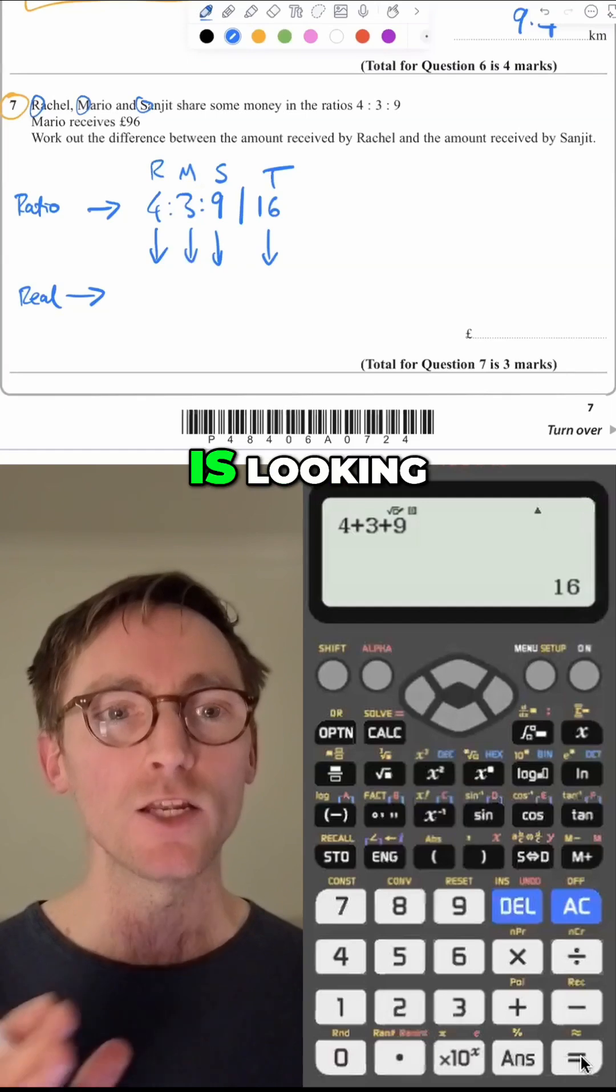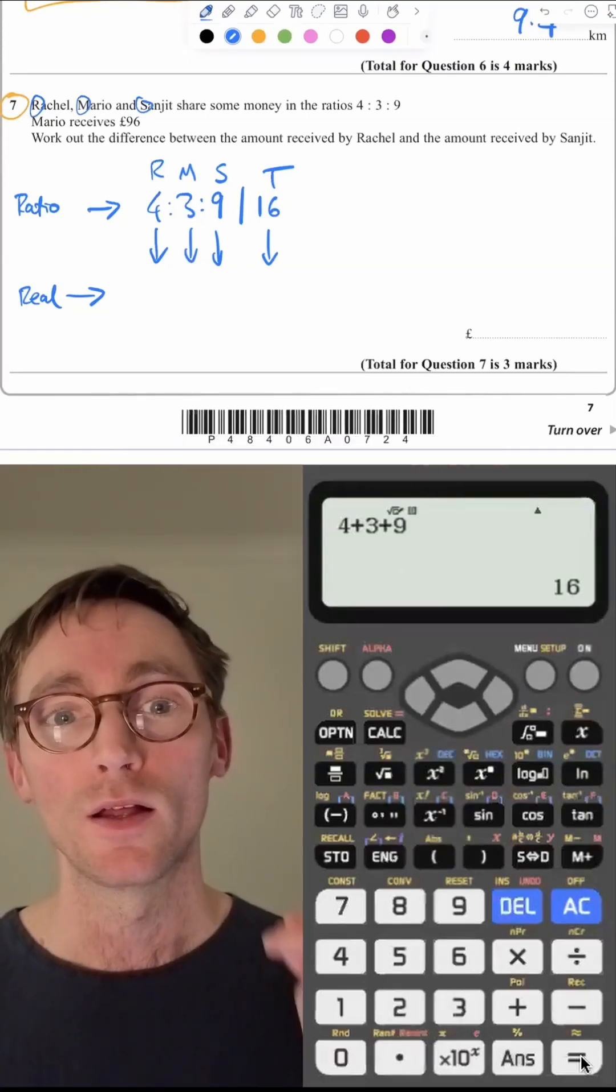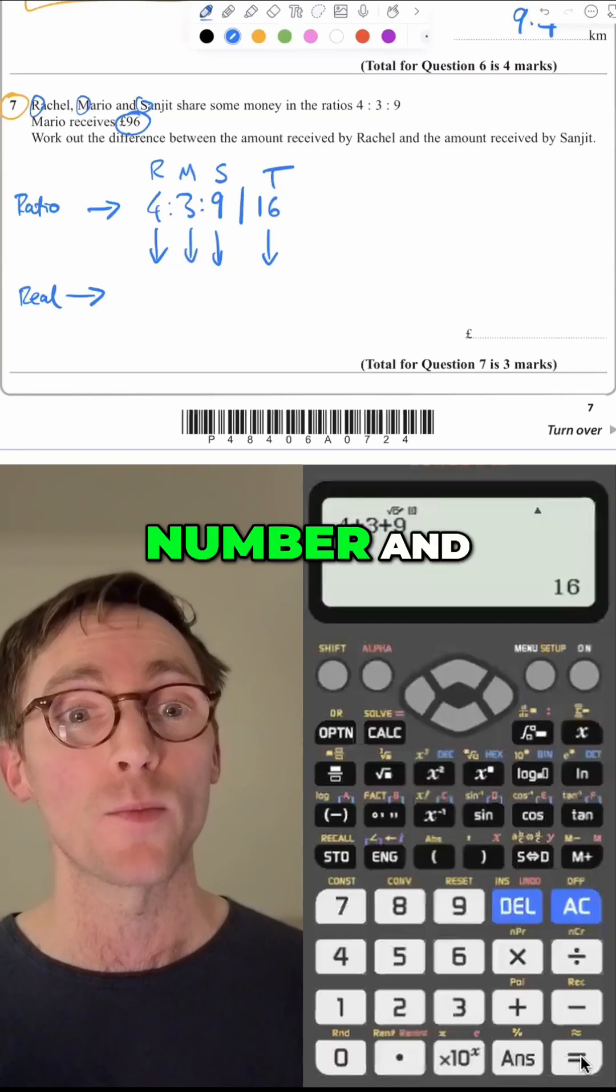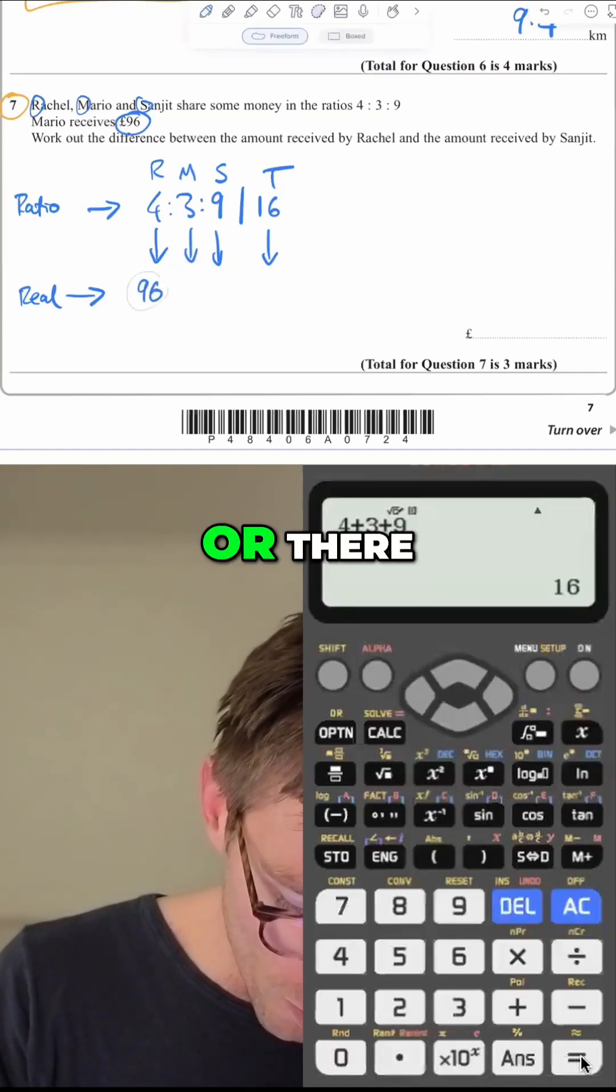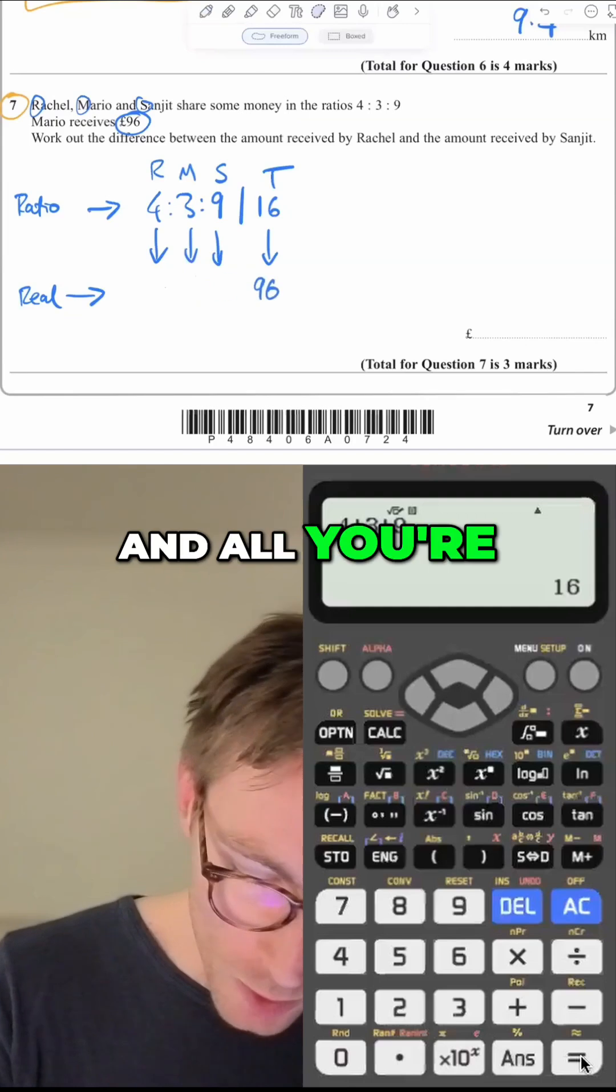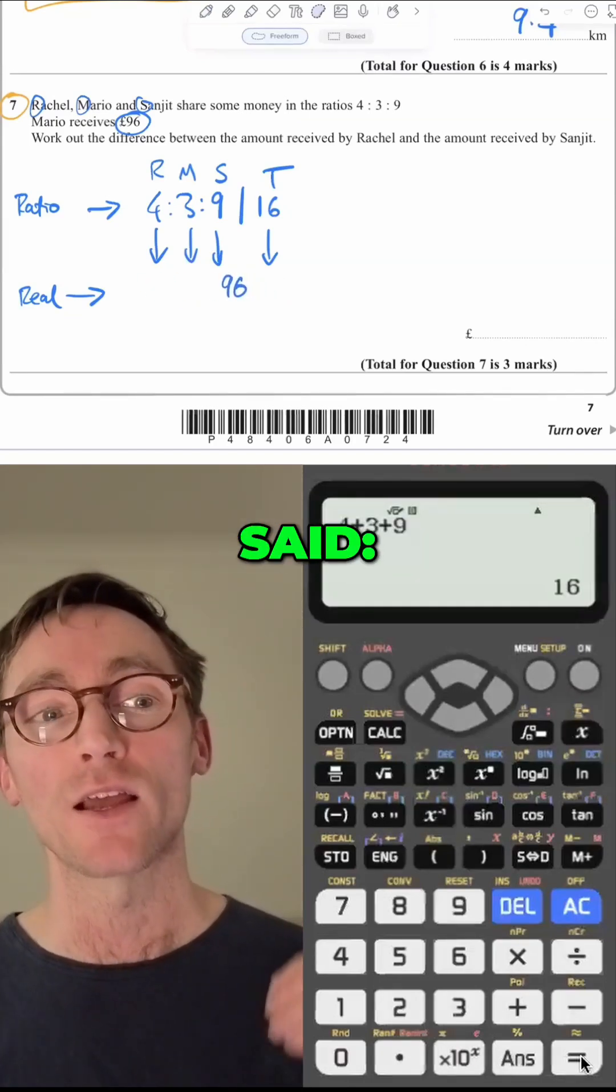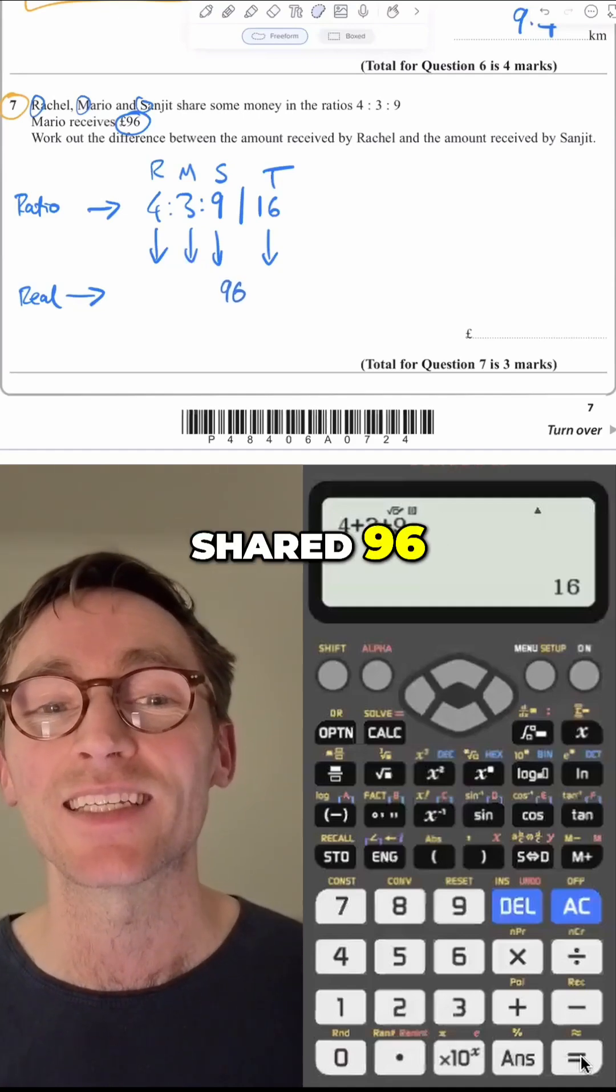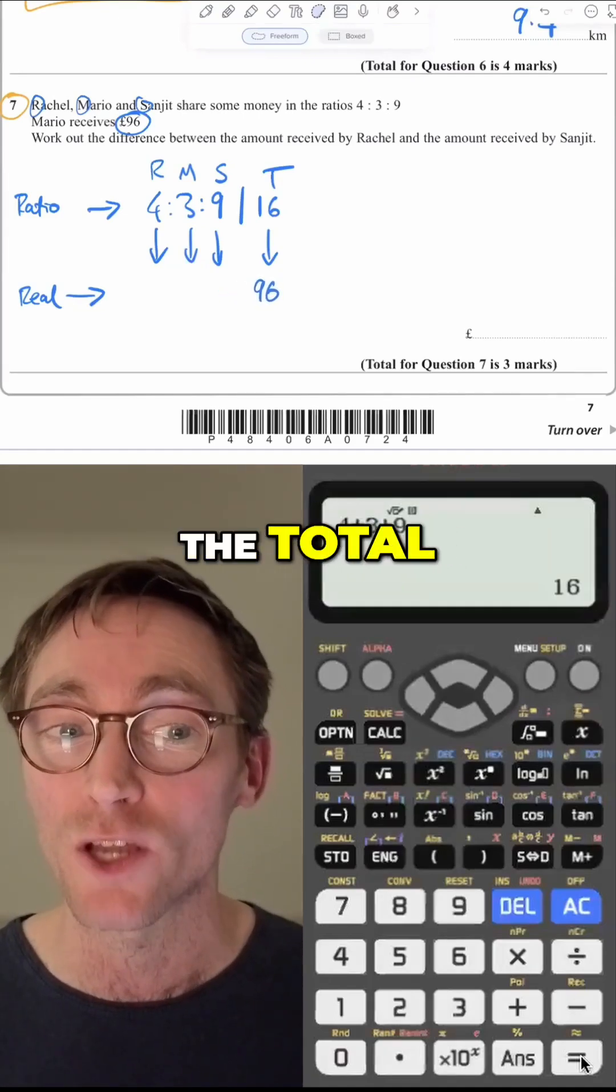And all you're doing is looking around the rest of the question. You're looking for one other number. Bang, 96. There's going to be another number. And this 96 is either going to be there or there or there or there. And all you're doing is working out where is that 96. If the question said Rachel, Mario and Sanjit shared 96 pounds in the ratio, blah, blah, blah, then it goes there because it's the total.